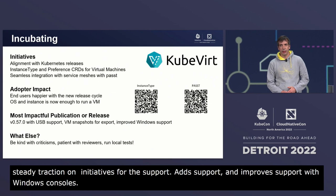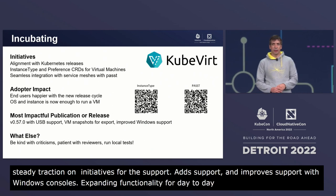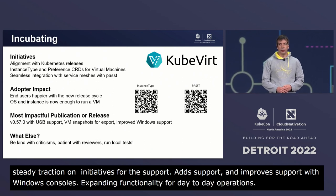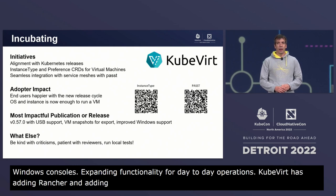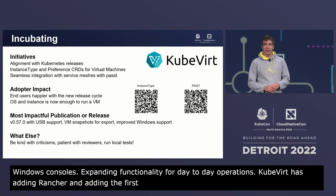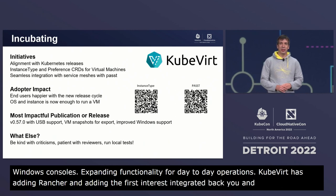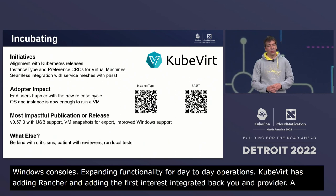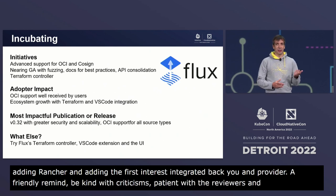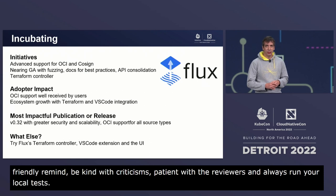KubeVirt has also improved virtualctl to support connections proxied by Rancher, and added Triliovault as their first integrated backup and recovery provider. A friendly reminder from the project: be kind with criticisms, patient with the reviewers, and always run your local tests.